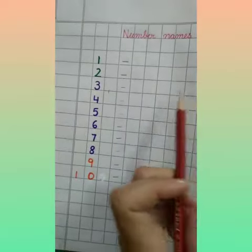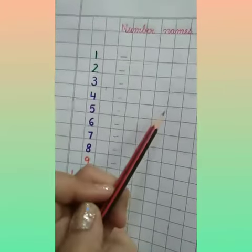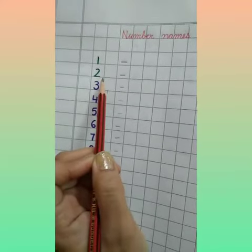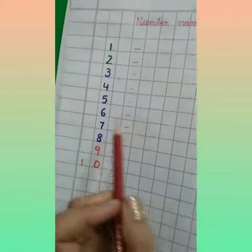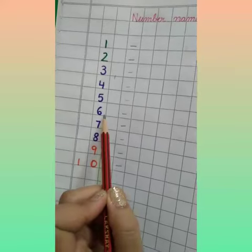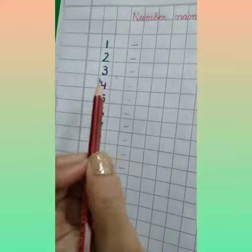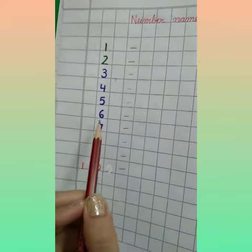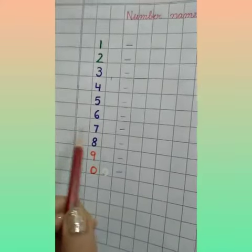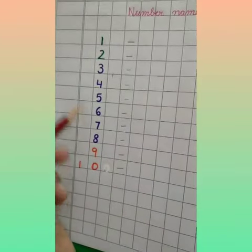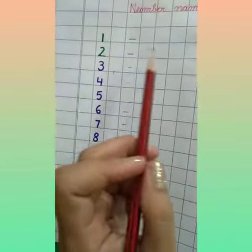Now if ma'am say, what this number is? What you will say? Ma'am this is 2. And what this number is? You will say ma'am this is 6. So 2, 3, 4, 5, 6. All these are the names of these numbers. These are all the names of these numbers.